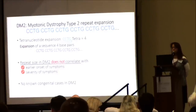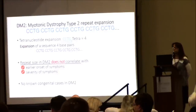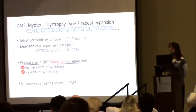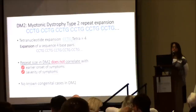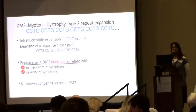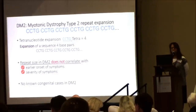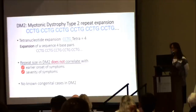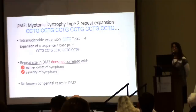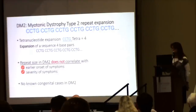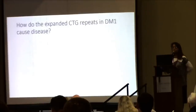In DM2, the repeat is CCTG, and in affected people it ranges from 75 to 11,000 — a huge number. However, in DM2 the repeat size does not seem to correlate with earlier onset or severity of symptoms, and to date there are no congenital cases of myotonic dystrophy type 2.